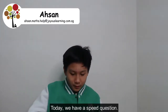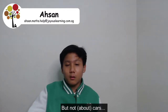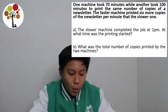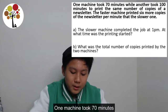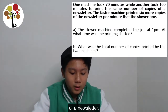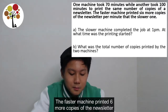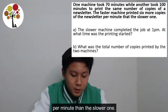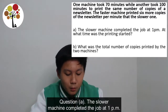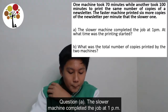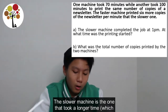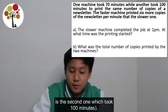Today we have a speed question, but not cars — it's a printing question. Question 1: One machine took 70 minutes while another took 100 minutes to print the same number of copies of a newsletter. The faster machine printed 6 more copies of the newsletter per minute than the slower one. The slower machine is the one that took a longer time, which is the second one that took 100 minutes.